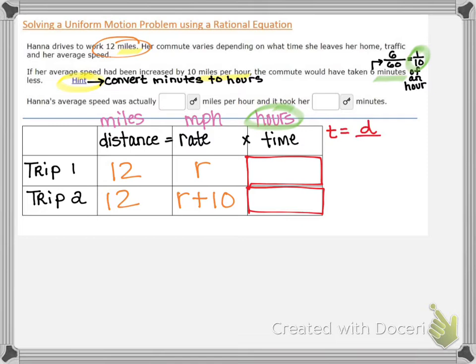Now we need to create ratios for the time. And when I say ratios, I mean we're going to rewrite time as the ratio of the distance divided by the rate. And then remember for trip two, that time would have been one tenth of an hour less than the time for trip one. So for trip one, let's write our time ratio. It's just going to be 12 over R. For trip two, our time ratio is 12 over R plus 10.